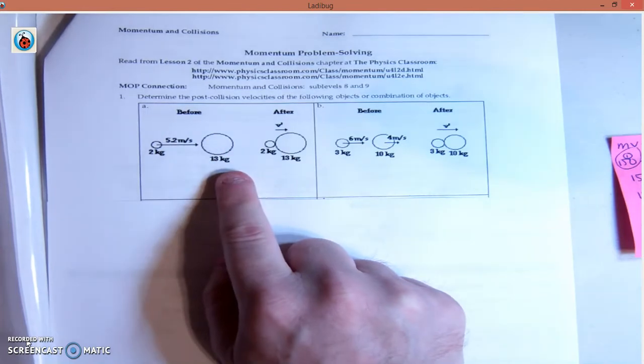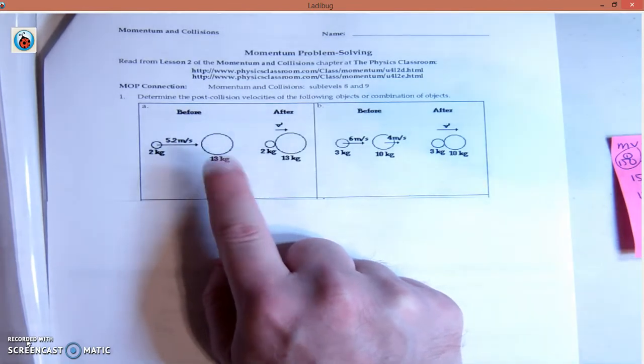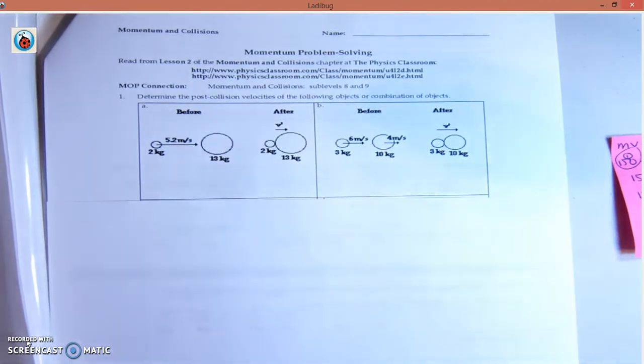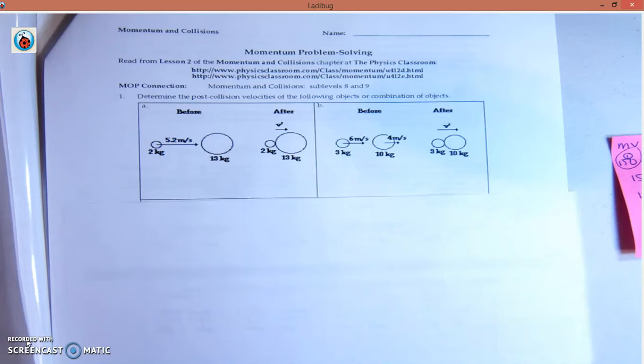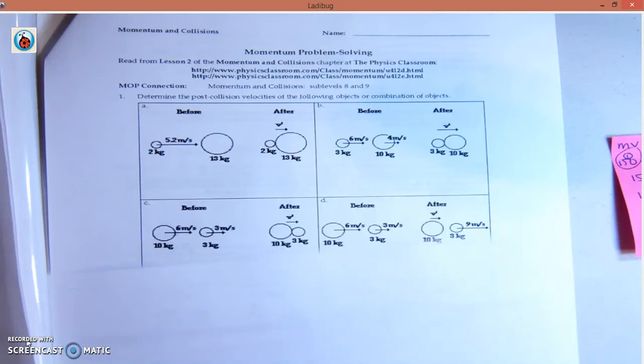We're going to do number 1a. It's not very hard because it's the same thing, just finding a different variable than what they give us. I'm going to write on my sheet here.